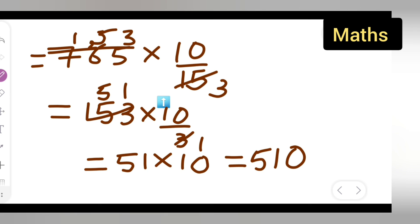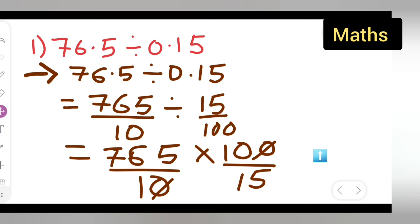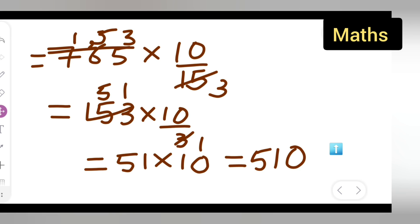510. When you are multiplying 51 by 10, it will be 510. So I hope you have understood how to divide 76.5 by 0.15. I hope you all have understood, and thanks for watching. If any doubts or queries, you can comment below.